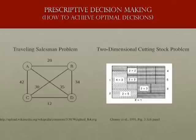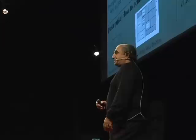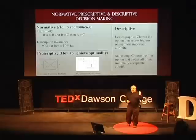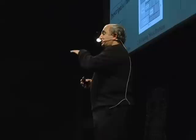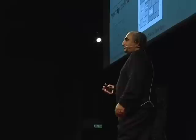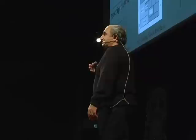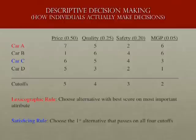If you contrast the prescriptive approaches to decision-making, this is where you're trying to prescribe some optimal behavior. Take the classic traveling salesman problem: if I'm a salesman who starts at city A and has to visit cities B, C, D, and return to A, what is the optimal route to minimize distance traveled? Or the two-dimensional cutting stock problem: if I have sheets of metal, glass, or wood to cut into smaller parts, how should I cut them to minimize wasted space? Those are called prescriptive approaches.